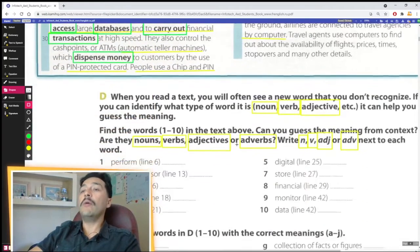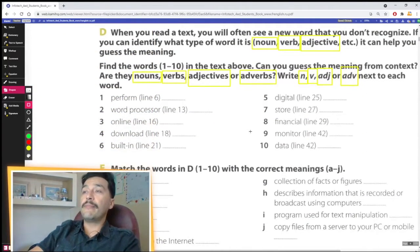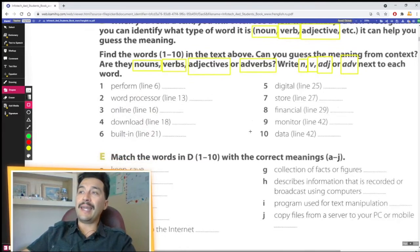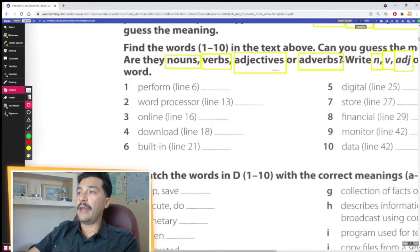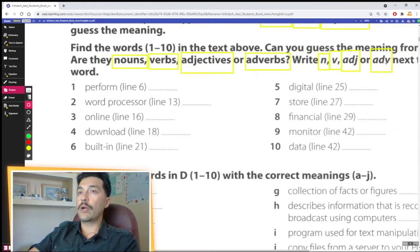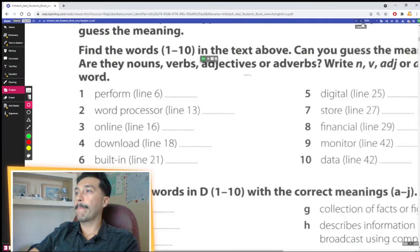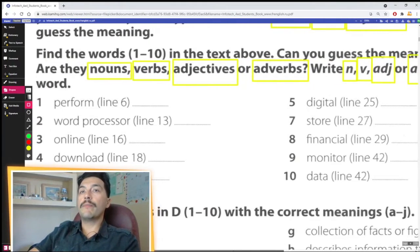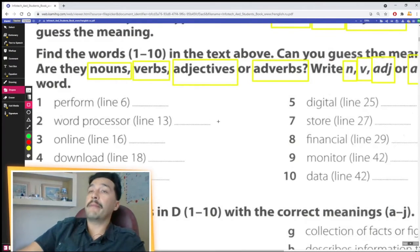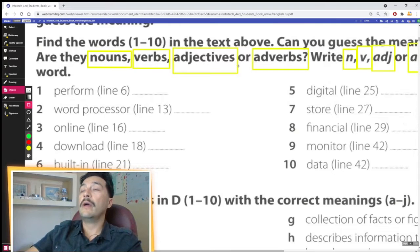Now we have 10 from this list for this exercise, we have 10 of those vocabulary. Now I'm gonna tell you, pay a lot of attention, and I'm gonna tell you if it's a noun, a verb, an adjective, or an adverb.